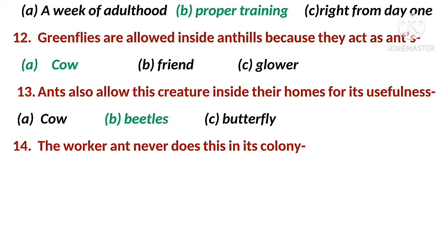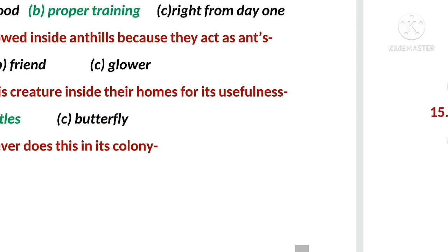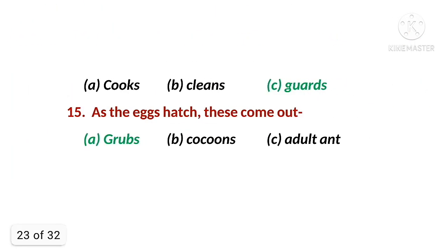MCQ 14: The worker ant never does this in its colony - the right option is C - guards. MCQ 15: As the eggs hatch, these come out - the right option is A - grubs. And with this we have come to the end of the MCQs.